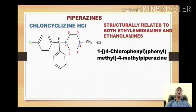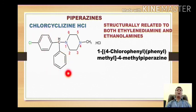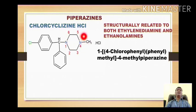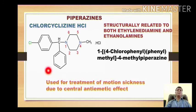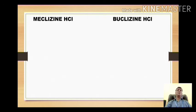If we look at the structure, we find that this structure is related with both the ethanolamine class of compounds and ethylene diamines, because in piperazine both these nitrogens are separated by a two-carbon chain, which was also the classical feature of ethylene diamine. Chlorcyclizine is used for treatment of motion sickness because it has a central anti-emetic effect — meaning this drug has its action in the central nervous system.